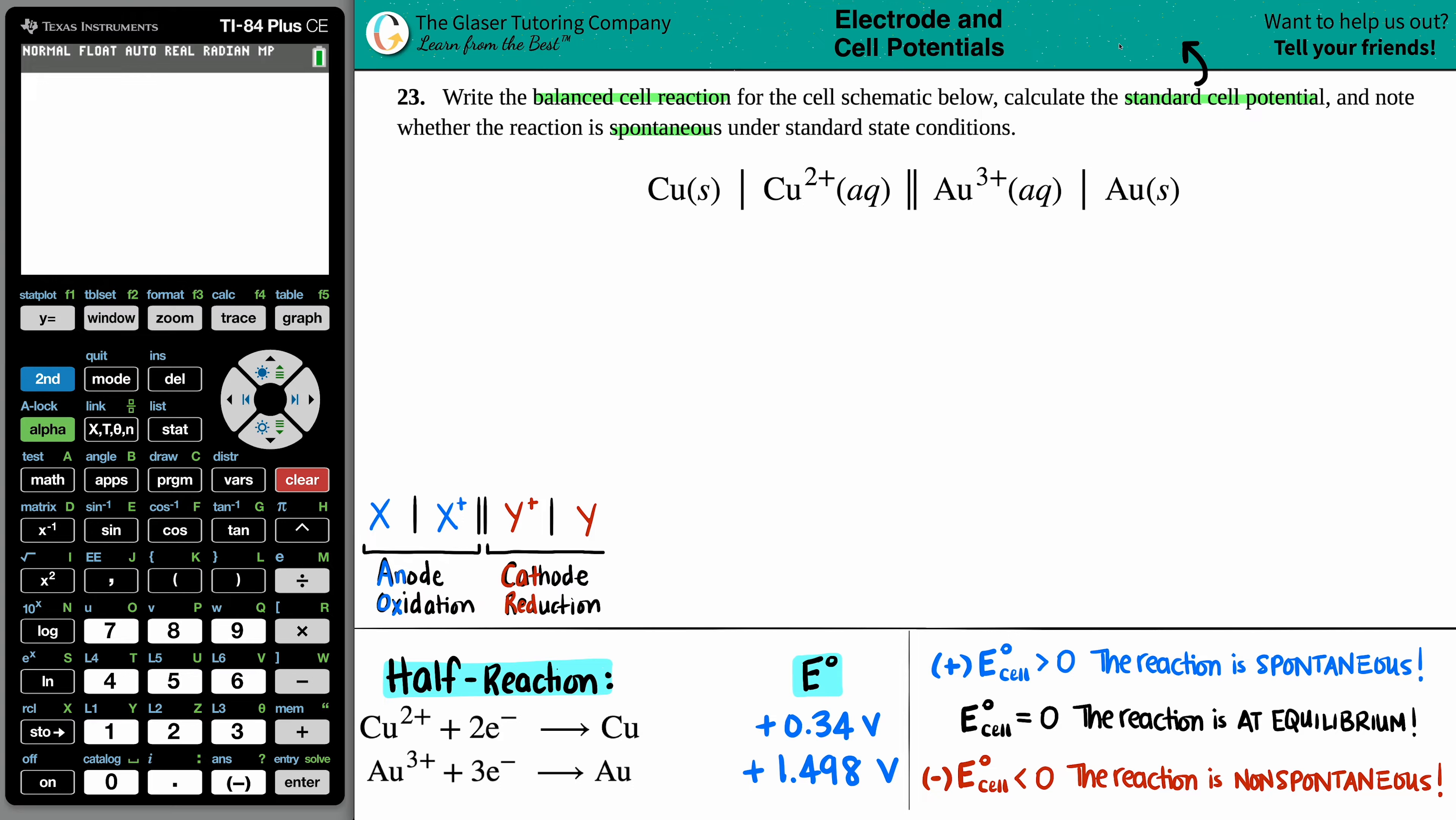If we're trying to solve for the standard cell potential, that is the E cell. This little notch here just means that we're dealing with standard state conditions. And that means that we can take the values in the back of a textbook, which I have taken right here.